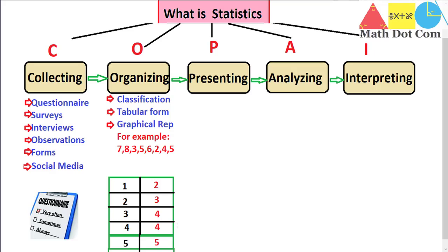You have to keep data in an organized, ordered manner. For example, here are the test scores of different students: 7, 8, 3, 5, 6, 2, 4, 5 out of 10. These numbers are arranged in an irregular manner — not in ascending or descending order. You have to arrange them properly to analyze how many students got five, how many got three, and so on. You can organize the data in tabular form, graphical form, or in an Excel sheet by properly labeling columns and arranging them in different sheets. This is called organization of the data.